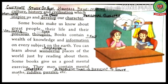Write down the meanings: culture means customs; history means study of past; civilization means human development; inspire means motivate; develop means to make; character means personal qualities. Some books give you fun, like story books, while text books are based on culture, history and civilization.